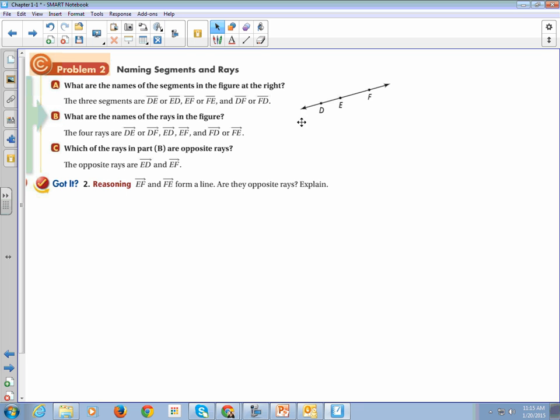What are the names of the rays in the figure? There is DE. There is DF. There is ED. There is EF, and FD, and FE. Which of the rays in part B are opposite? So ED and EF are opposite rays.